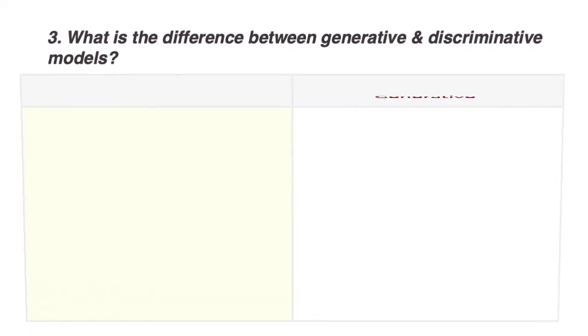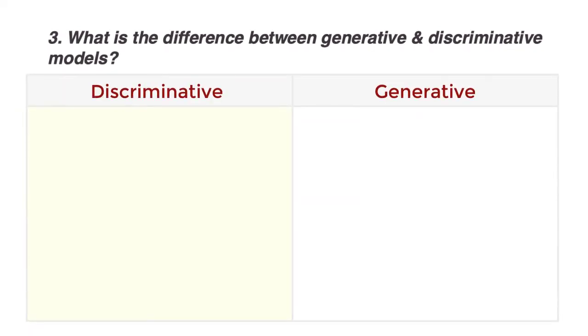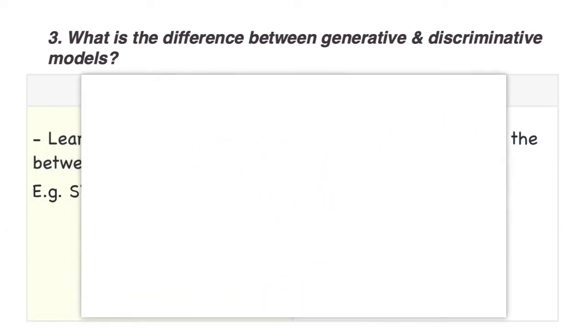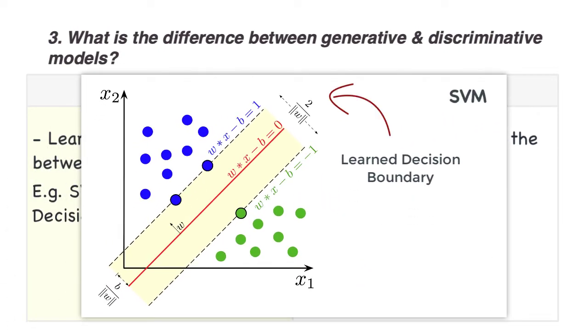What is the difference between a generative and discriminative model? Discriminative models learn decision boundaries between classes. Generative models learn the distribution of the classes themselves. SVM is discriminative because we are creating a decision boundary. It is a maximum margin classifier, after all.